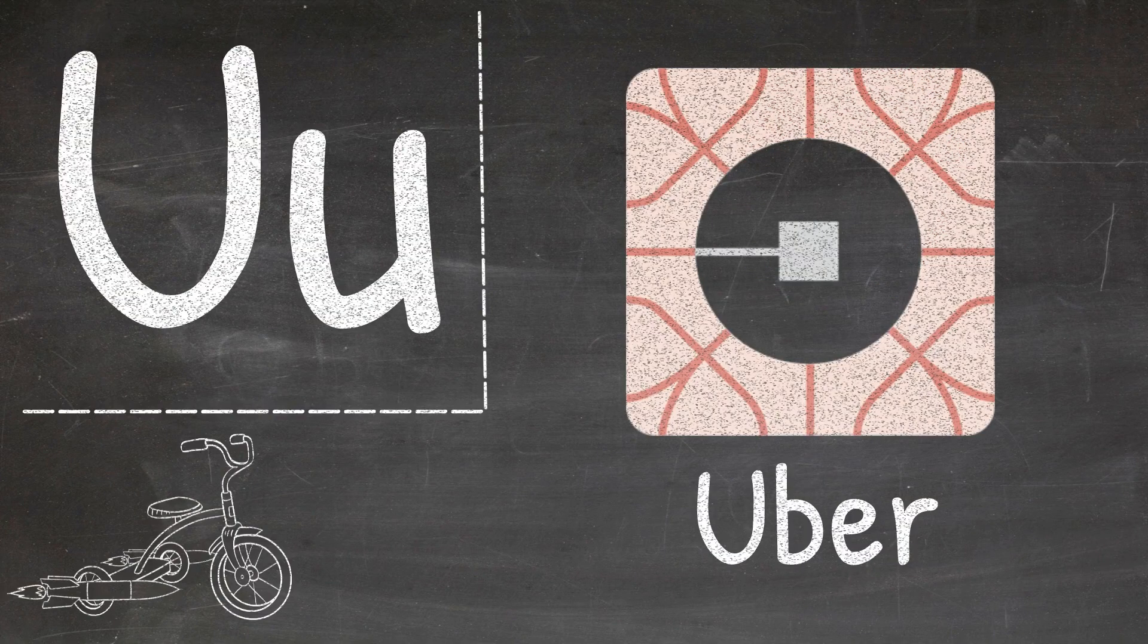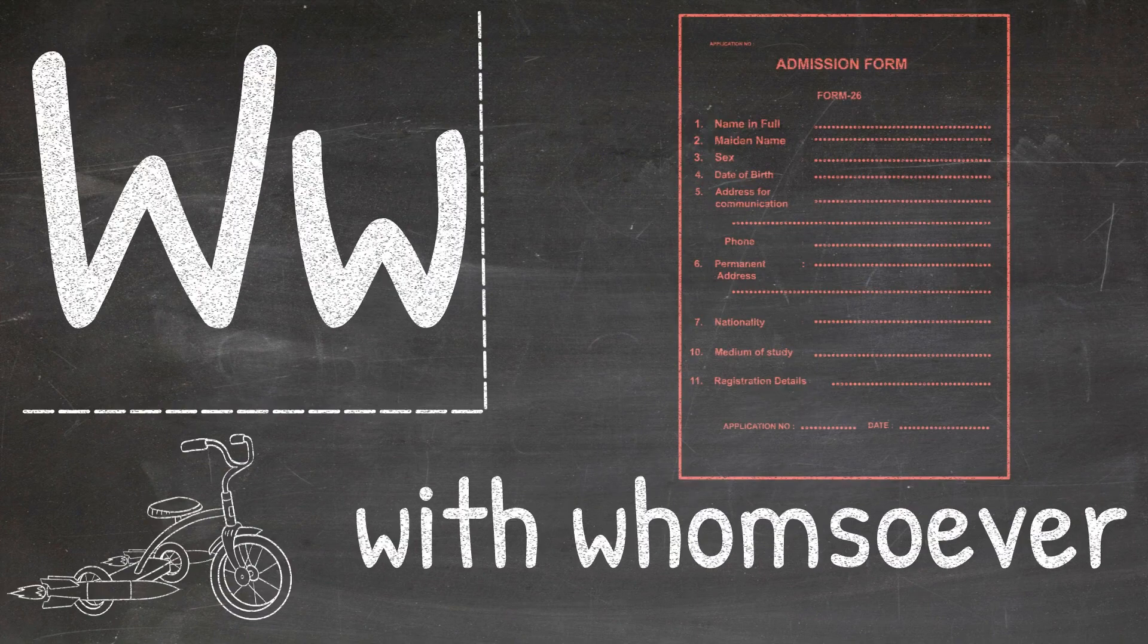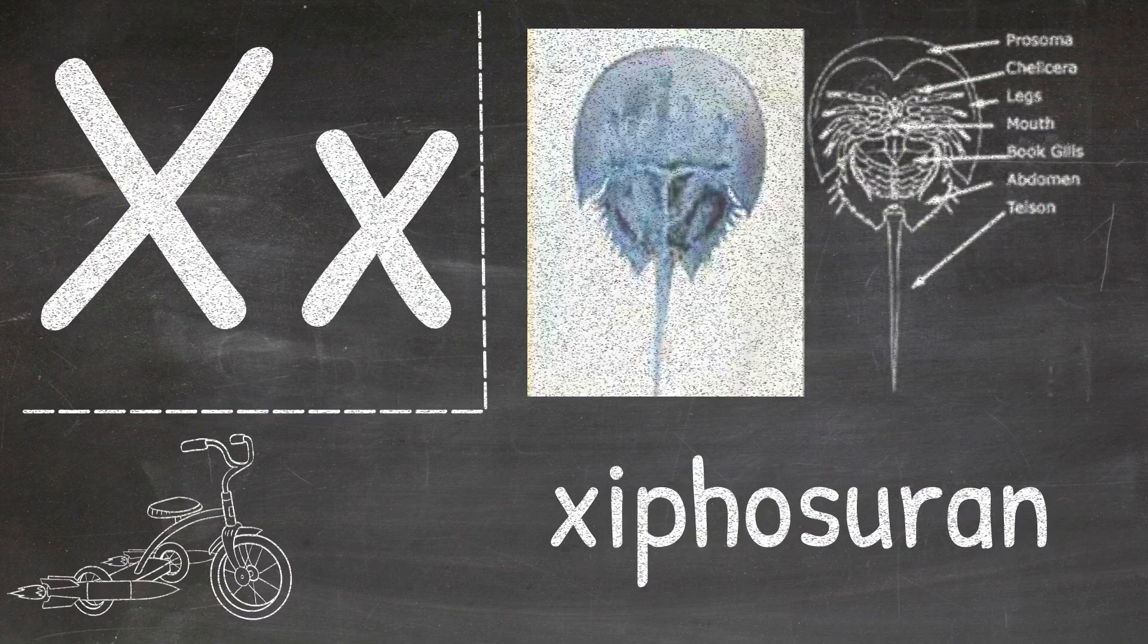U is for uber, V is for velociraptor, W is for with whomsoever, X is for zypoceran.